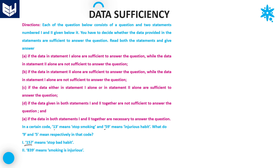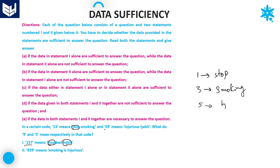Looking at statement 1 alone: 1 is common in the first code, and 3 is not there, so the common word is 'stop', meaning 1 equals stop. Automatically, 3 equals smoking. Next, 5 is common between the two statements, and the common word is 'habit', so 5 equals habit. If 5 is habit, automatically 9 equals injurious. Therefore, by using statement 1 alone, you will get the code for 5 as well as 9. Statement 1 alone is sufficient.